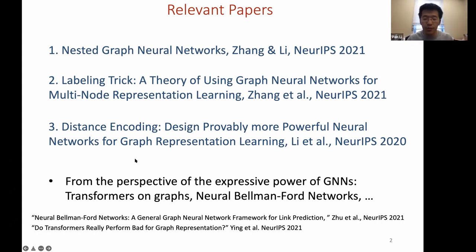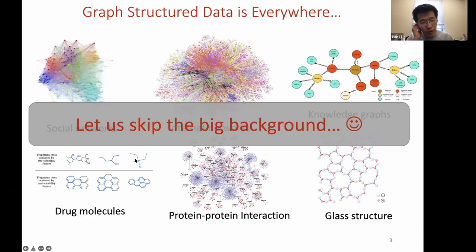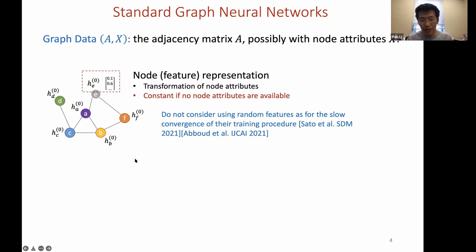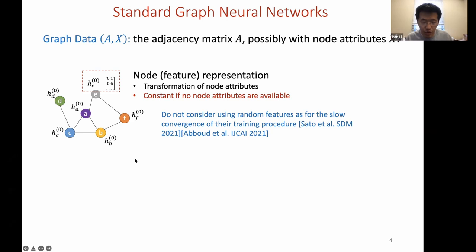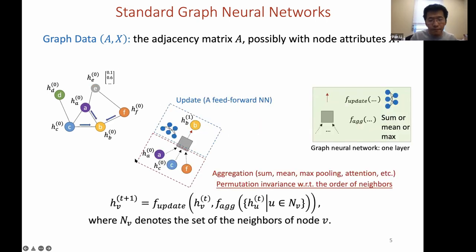I will focus on the expressive power of these models. Let me start with a quick review of standard graph neural network models. Given graph-structured data, a GNN typically starts by associating each node with an initial vector representation based on transformations of node attributes — for example, demographic information in a social network or item types in a molecular network. If node attributes are unavailable, initialization uses a constant or node degree.